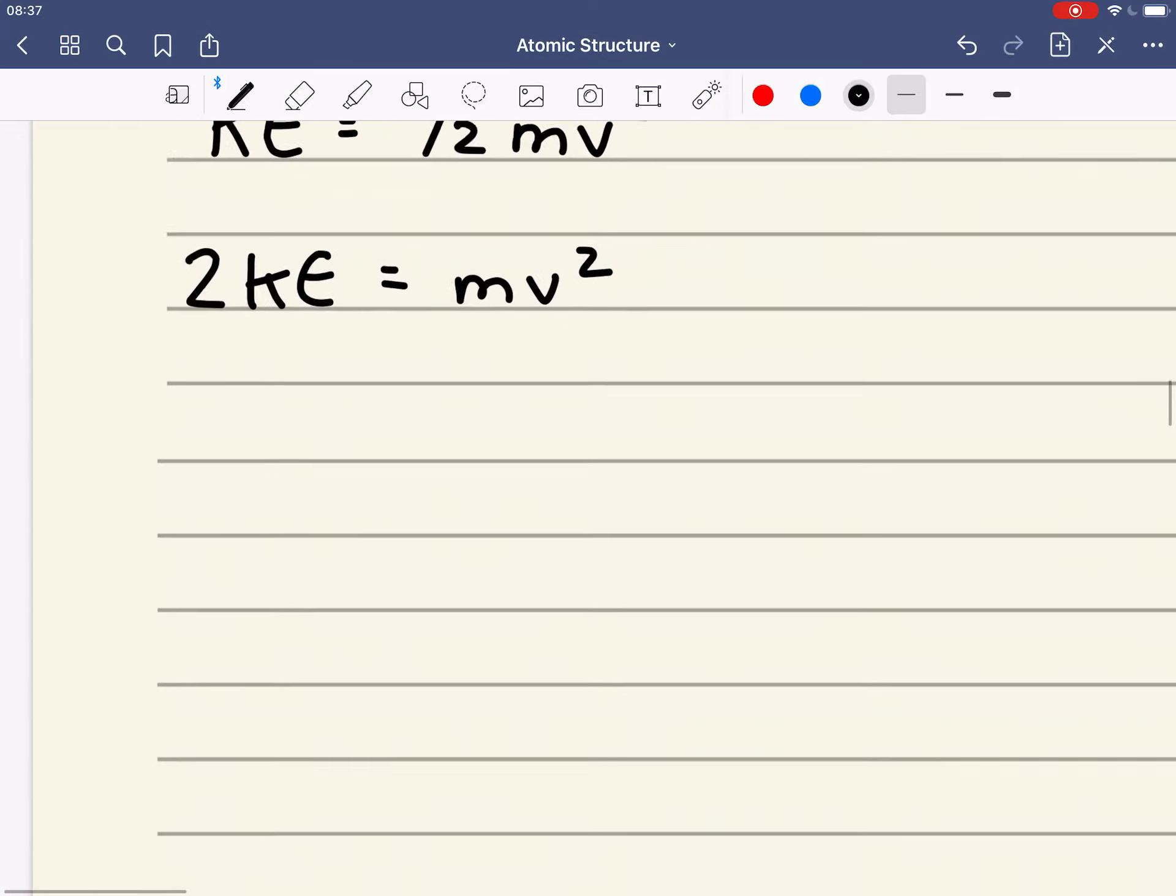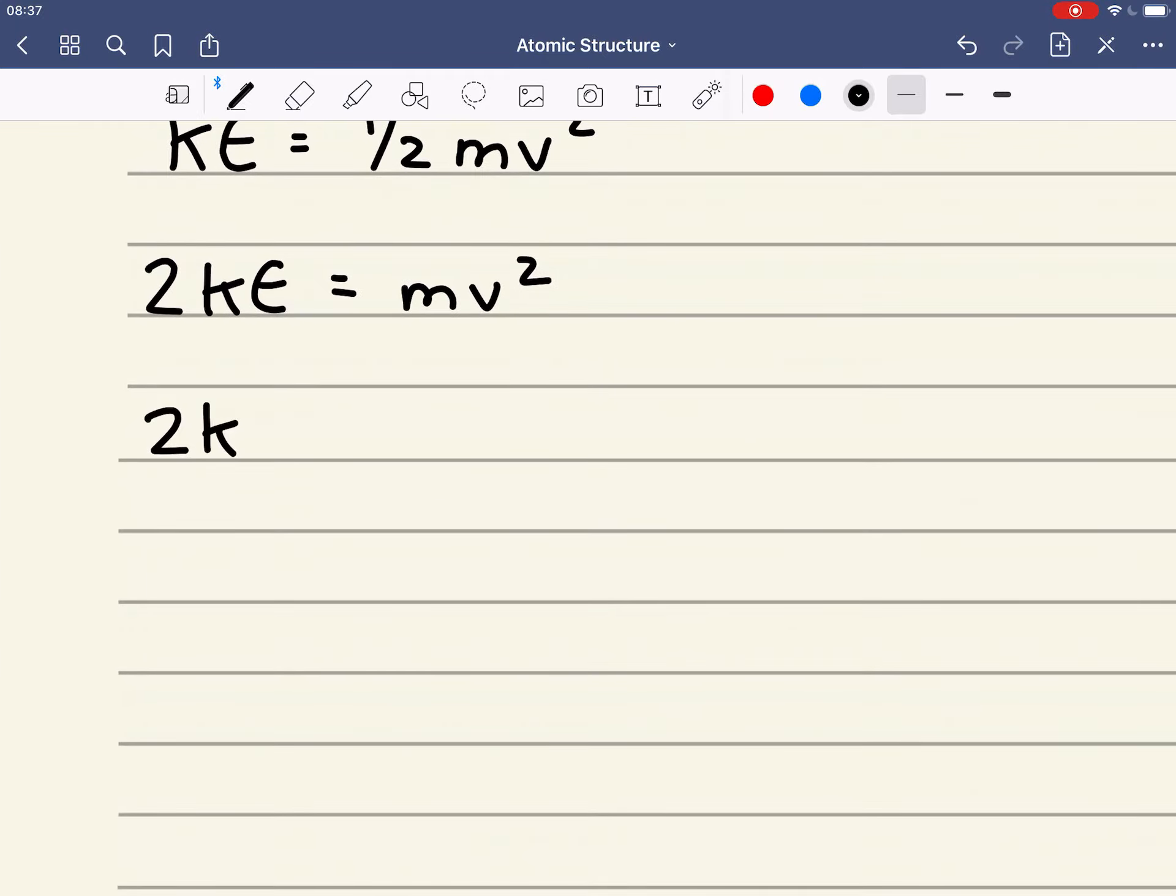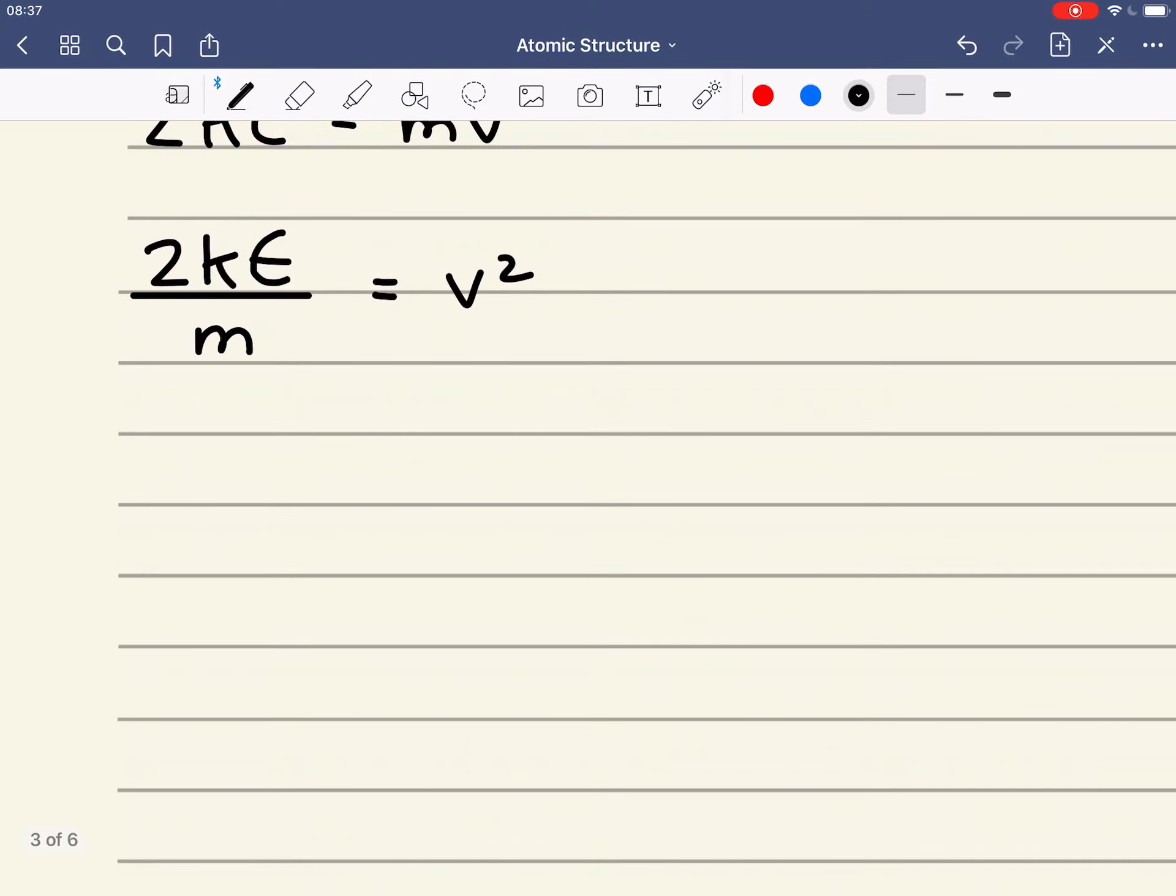I'm now going to divide both sides by m. And that gives me this. And then in order to get a v on its own I'm going to square root both sides.